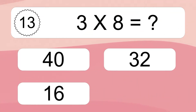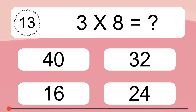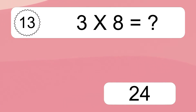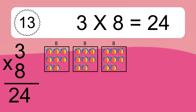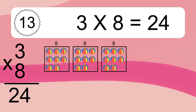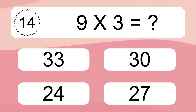3 times 8 equals what? We have 3 boxes, and each box has 8 colorful balls inside. If you count all the balls in all the boxes together, you will have 3 times 8 balls. This equals 24 balls.